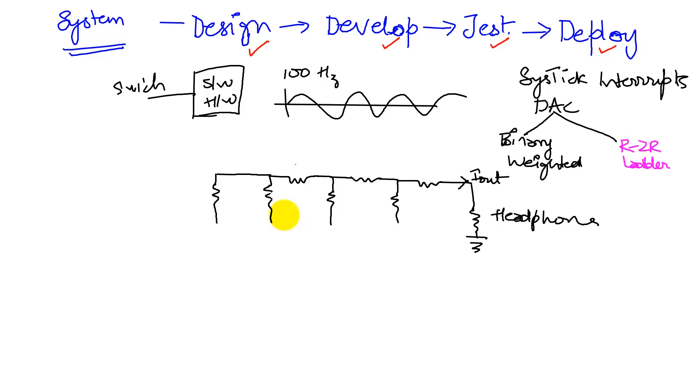So the resistors that we use will be in the ratio R2R. So there's an R here, 2R, R, 2R. This will be a 2R, and this is a 2R, and this is a 2R also.